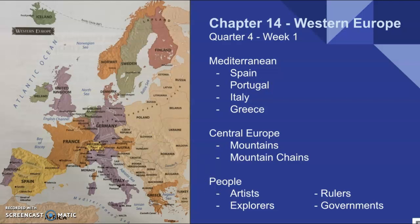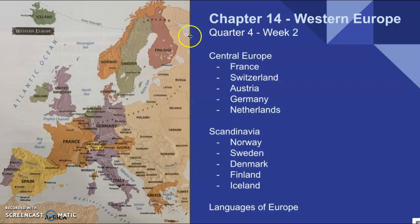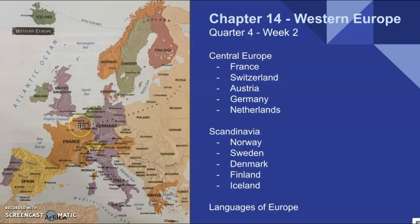This week we're going to continue talking about Western Europe, covering the rest of it. We talked about the lower parts last week. This week we'll start with France, move over to Switzerland, then to Austria, then Belgium, over to Germany, then the Netherlands. We'll go north to the Scandinavia area and talk about Norway, Sweden, Denmark, Finland, and Iceland. We've already talked about Ireland and the United Kingdom, so these are the remaining Western European countries.